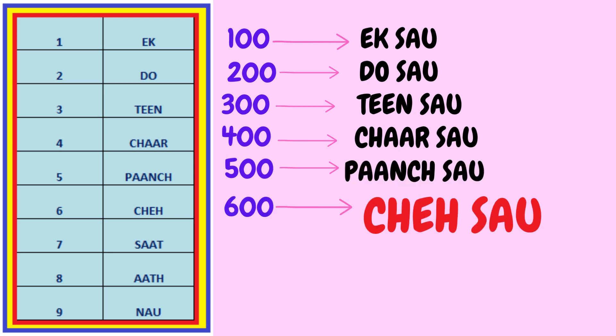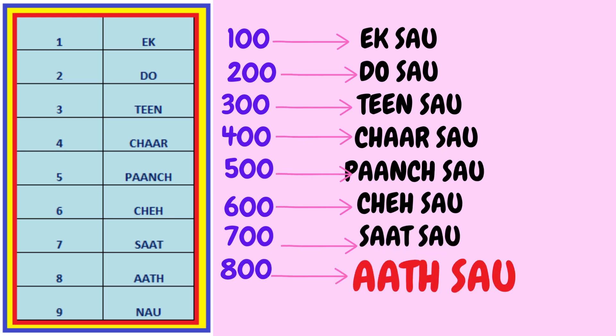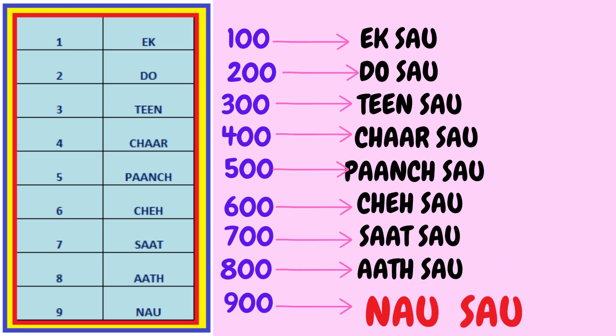Similarly, 6 is known as 'chha' in Hindi, so 600 becomes 'chha saw'. 700 — 7 is known as 'saat' in Hindi and 100 is 'saw', so it becomes 'saat saw'. 800 becomes 'aat saw' because 8 is known as 'aat' in Hindi and 100 is 'saw'. And then comes 900, which is known as 'nao saw'.